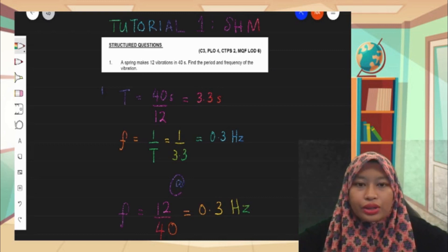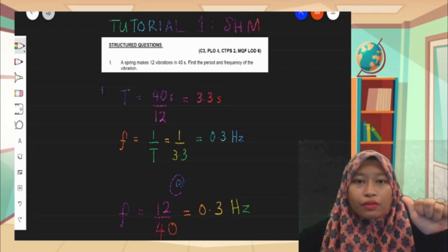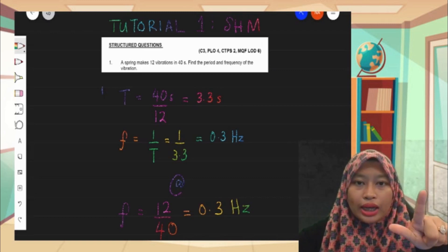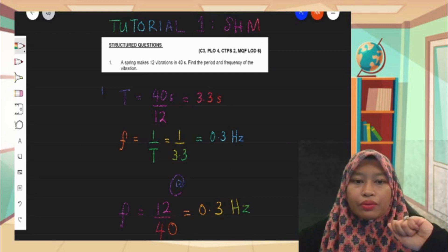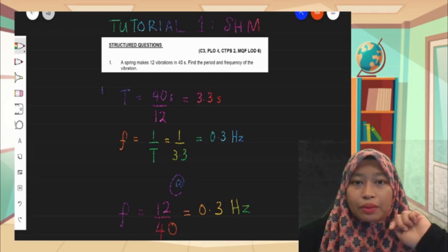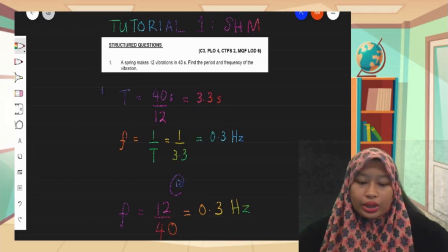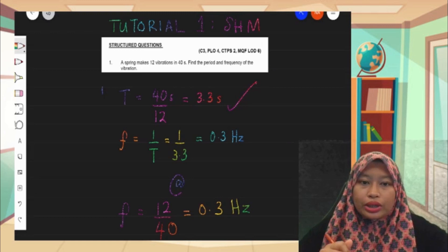There are two questions here. The first one we need to find the period, the second one we need to find the frequency. For the period, we know that the definition of the period is actually the time taken to make one complete oscillation. Since here we have 12 oscillations or 12 vibrations in 40 seconds, therefore we can get the period by dividing 40 seconds by 12, so we got 3.3 seconds.